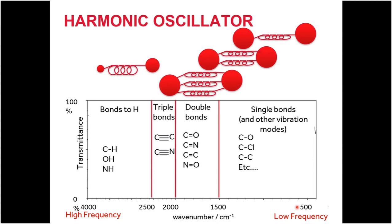Single bonds where you have two heavy atoms on either side are shifted into the fingerprint region — the really low frequency, low wavenumber region. This confirms that bond strength or stiffness is also important in determining the position of a vibration in the infrared spectrum. In the double bond region, we have carbon-oxygen, carbon-nitrogen, carbon-carbon, and nitrogen-oxygen double bonds, which sit perfectly between the single bond vibrations and the triple bond vibrations.